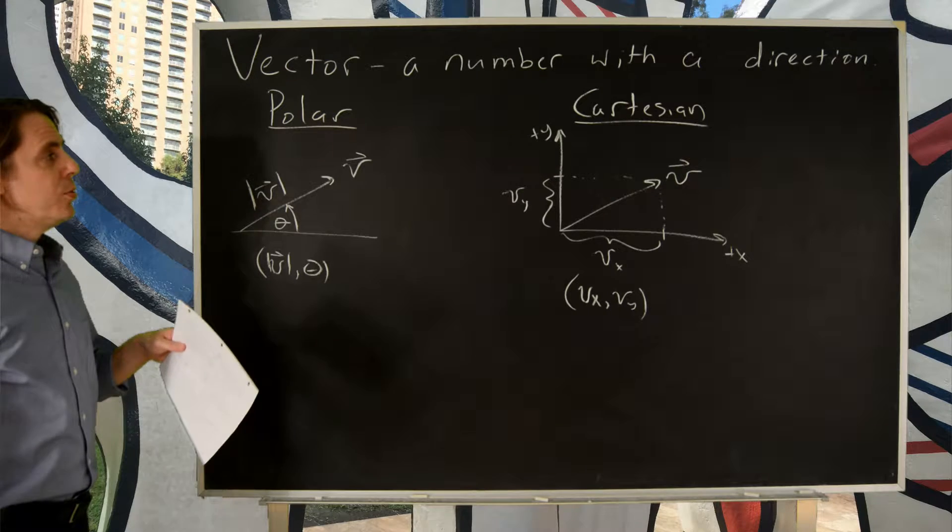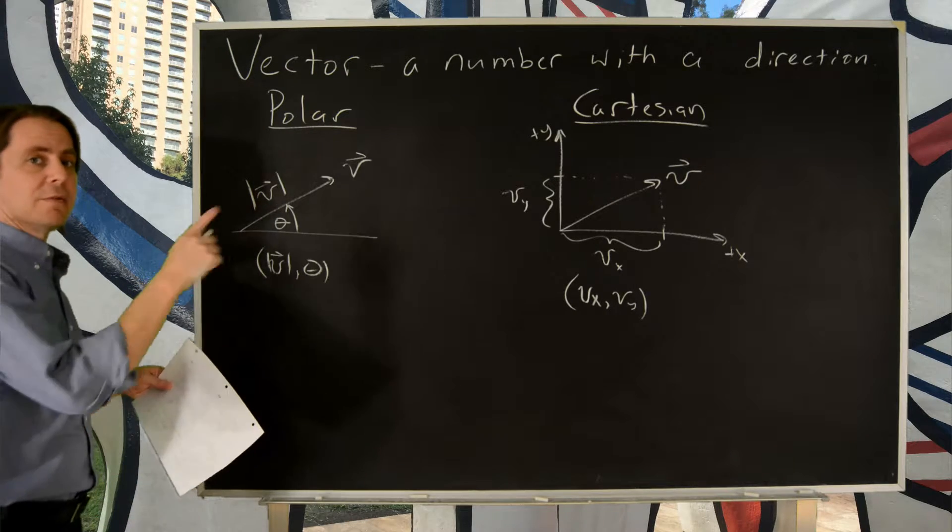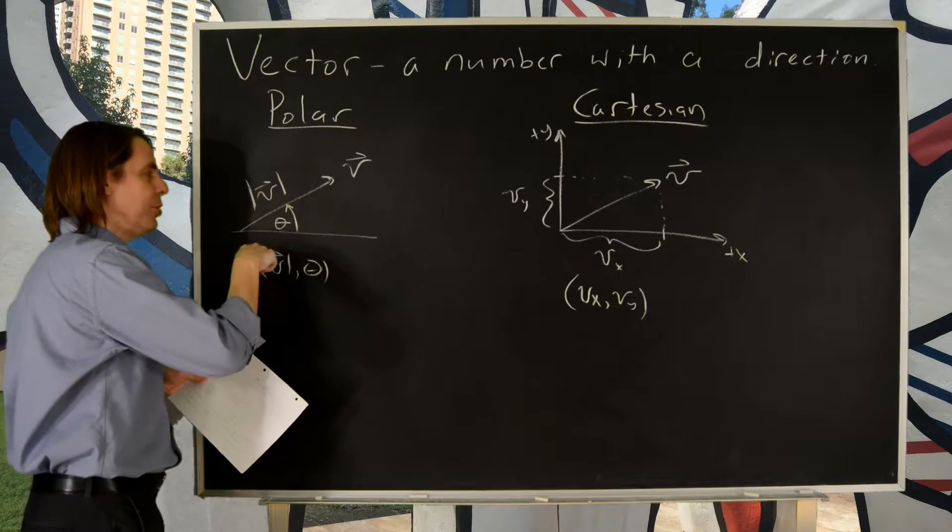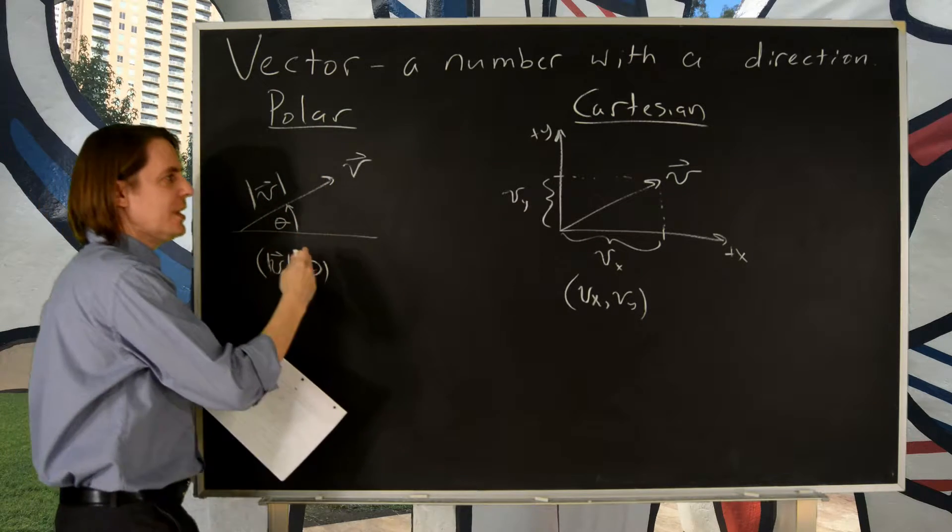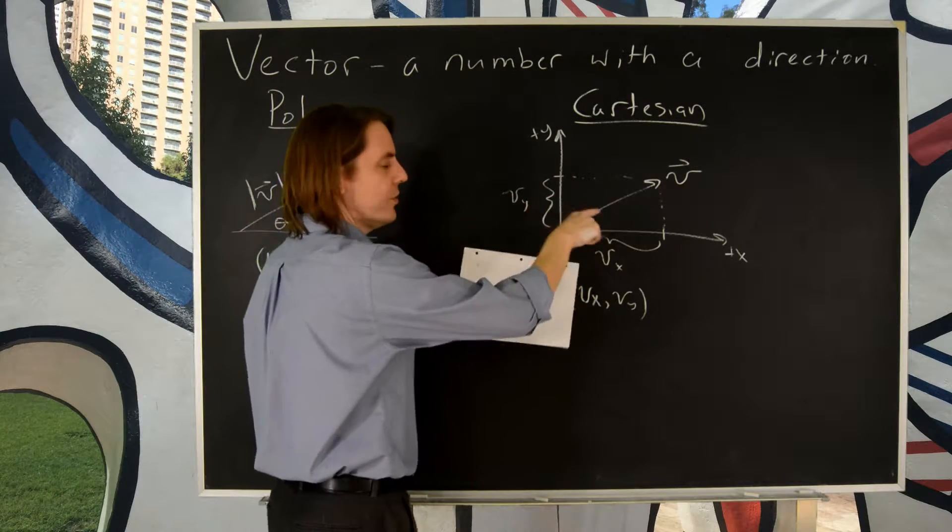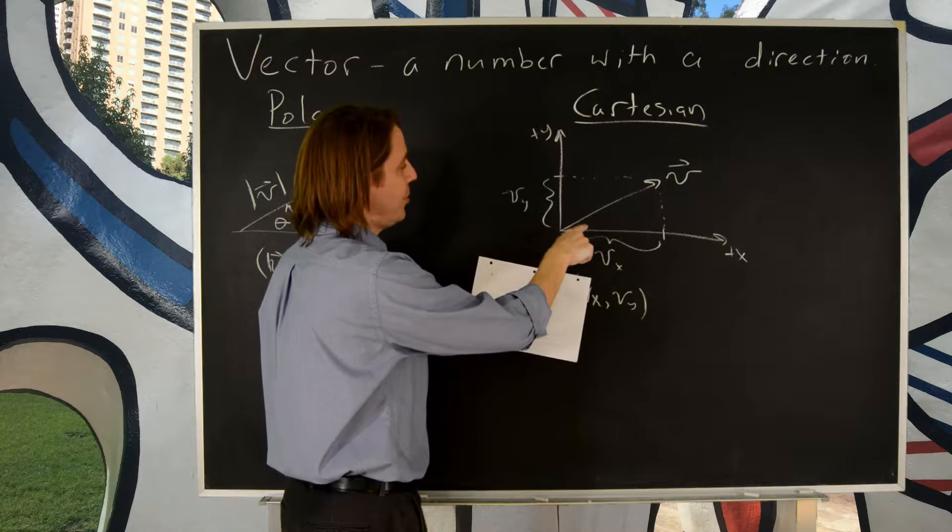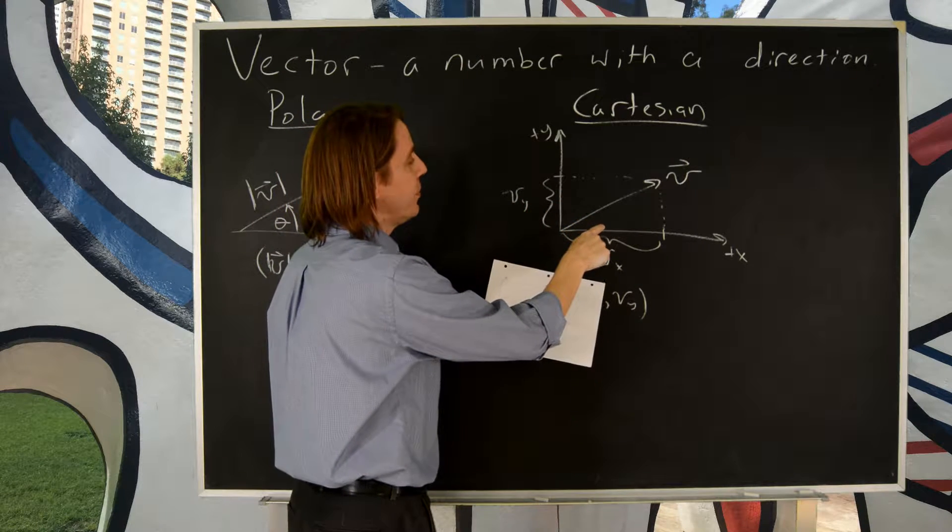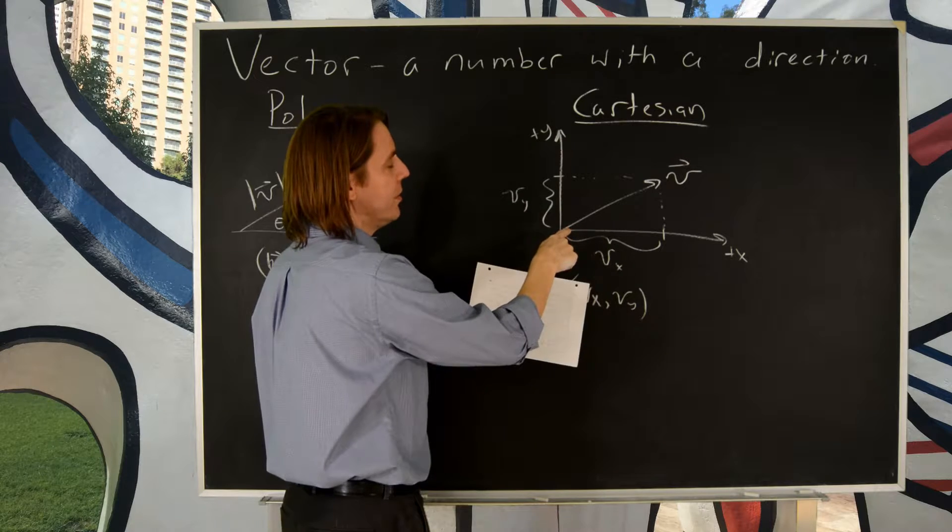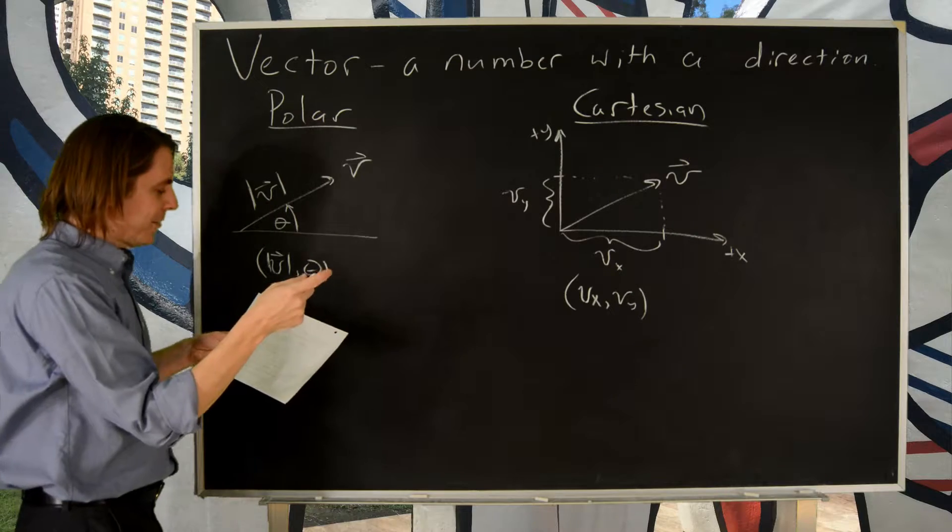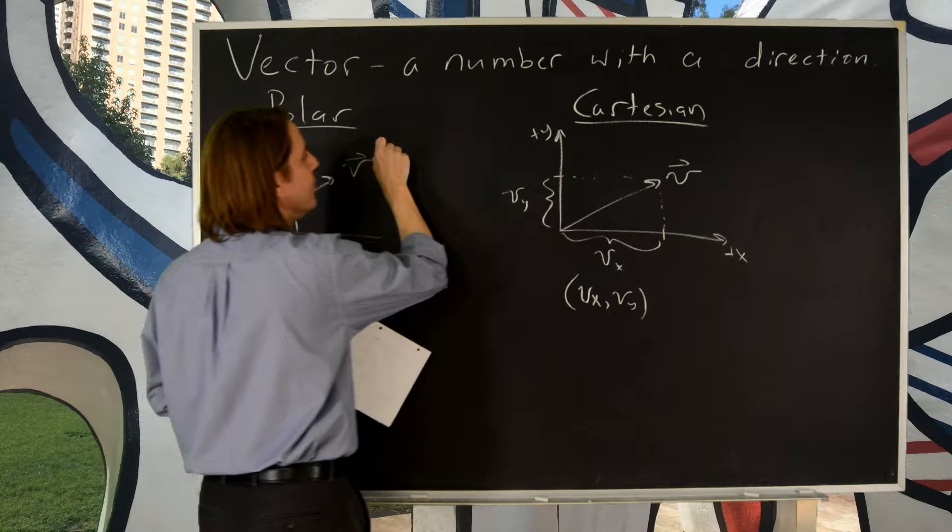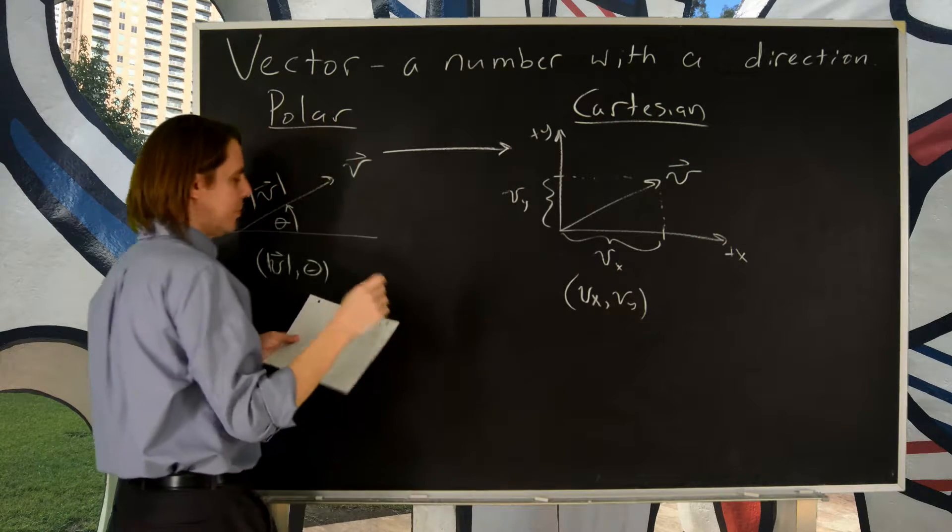Now, in a problem, you're going to have to constantly go back and forth. Often in a problem, you're given the polar, some velocity at some angle. But to do the physics, you have to get it in Cartesian because you treat those separately when you do problems. And then in the end, they might ask you for the total velocity and direction. You may have to go back and give the answer this way. A lot of back and forth. So let me just give those equations. You can get them from trig.